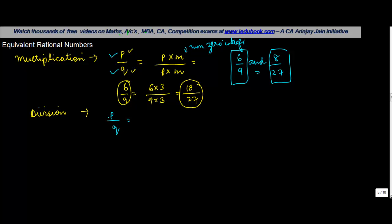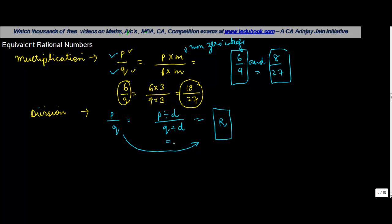Similarly, in the case of division: if you have any rational number in the form of P upon Q and you divide both the numerator and the denominator by a common divisor D, the resulting rational number that you obtain is an equivalent rational number of P upon Q.